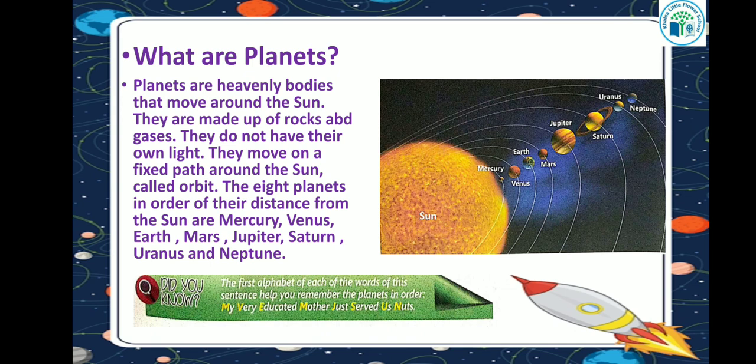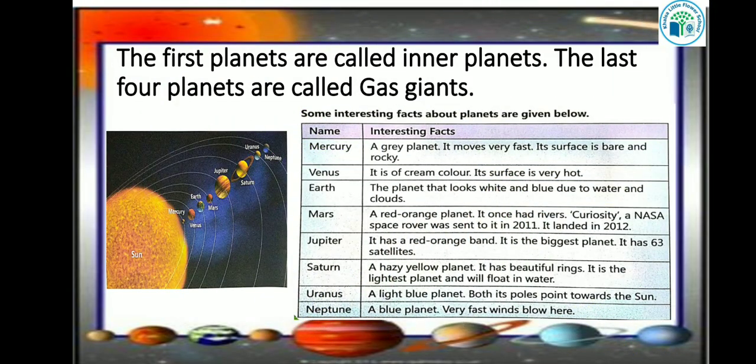The first four planets are called inner planets — those closest to the sun. And the last four planets are called gas giants — those farther from the sun. You can also see this in the picture. Now, some interesting facts about each planet are given in the table below.